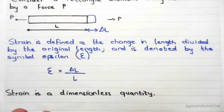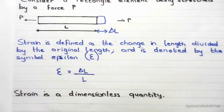Now since we are dividing a unit of length by another unit of length, the units are going to cancel each other out, and therefore strain is a dimensionless quantity.